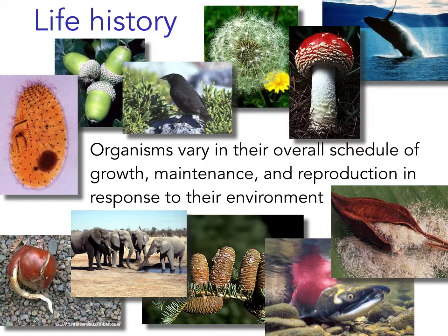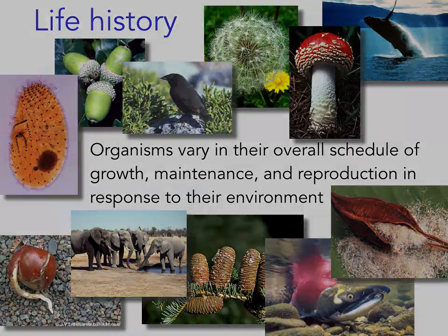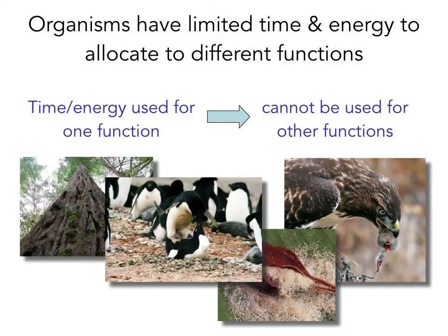To begin our discussion of life histories, we first need to talk about the problem of allocation of time and energy. The basic tenet of life history theory is that organisms have limited time and energy to put into different functions — growth, maintenance, and reproduction. Energy used for one function or purpose cannot be used for another. What are some of the trade-offs that organisms face as they balance the need for growth, maintenance, and reproduction?